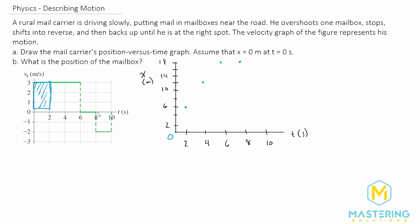Then from eight to ten seconds, it goes down to negative two meters per second, and so that is a two by two area, meaning it goes down four. So from 18 minus four, that's 14 meters.